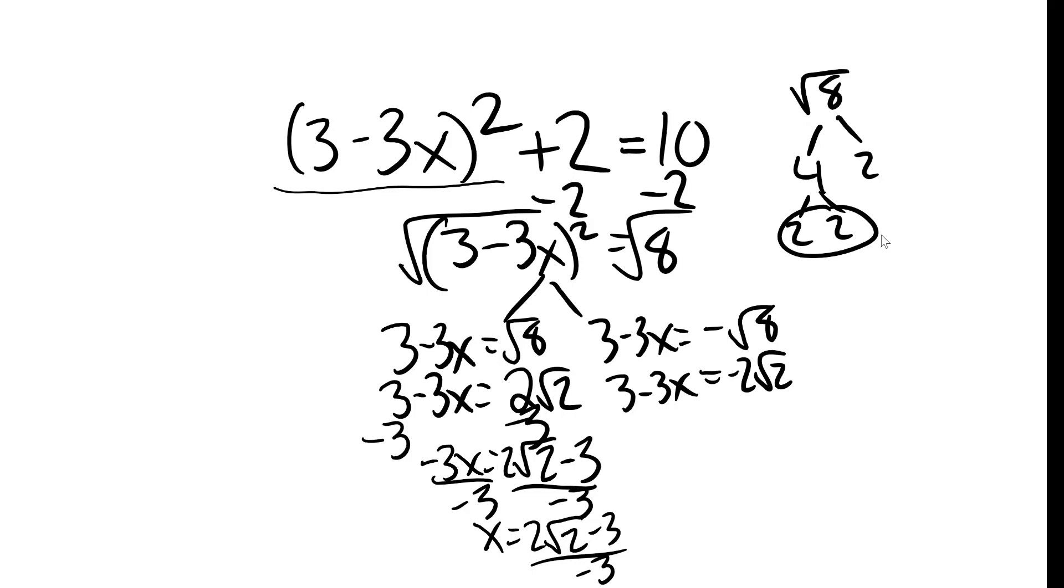Next answer. Add 3x, or wait, whoa, no, subtract 3 from both sides. The steps are the same here. We get negative 3x equals negative 2 root 2 minus 3, and divide by negative 3, and the other answer is negative 2 root 2 minus 3 over negative 3. Cool.